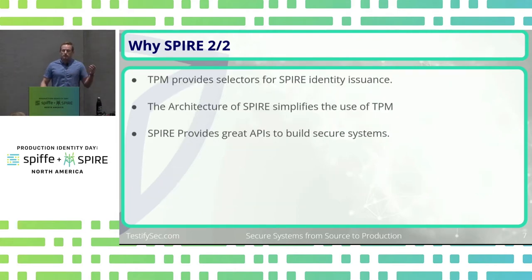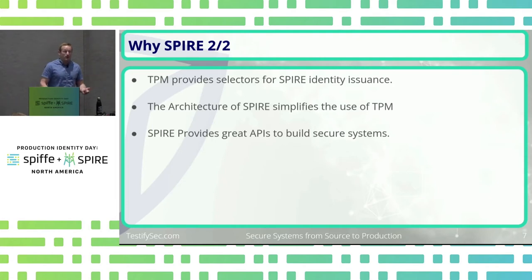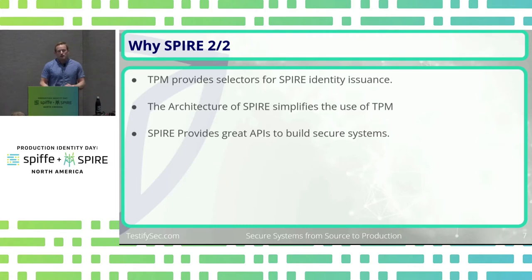That TPM is going to provide selectors for Spire's identity issuance. The Spire selectors framework works really well with the TPM. The architecture of Spire really simplifies how we use TPMs in our system. And finally, Spire provides some really good APIs that allow us to build on our secure systems.